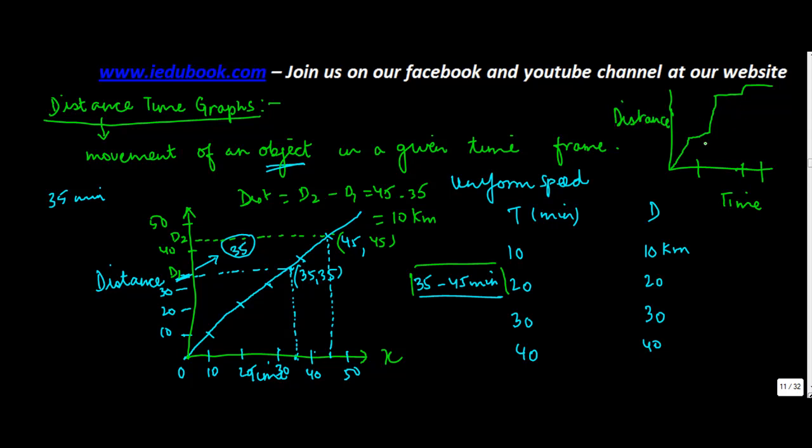By plotting these points across this graph, you can find out how much distance is traveled in what period of time, what's the speed at which the car or any object is moving.